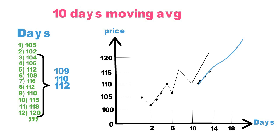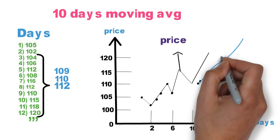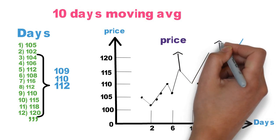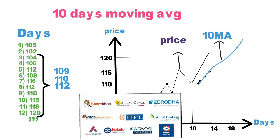The black line is the price and the blue line is the 10-day moving average. If I need a 20-day moving average, I just add 20 days and divide by 20. We don't need to do these calculations every time — in every trading software, the moving average indicator is available for free.